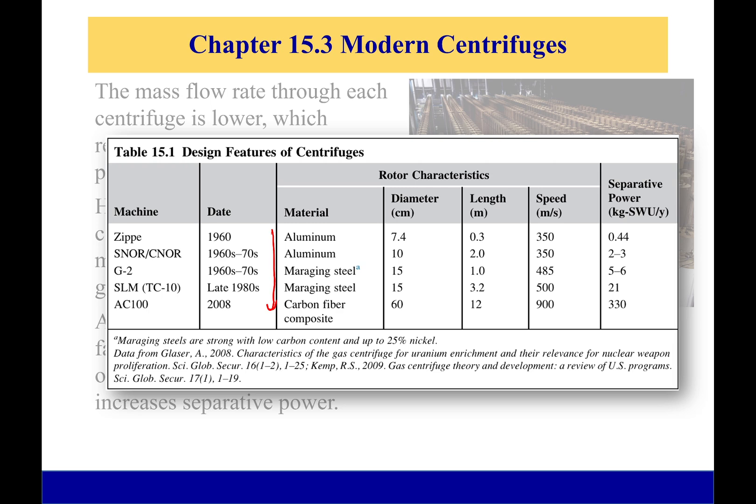And so my separation power, which is just how much I can separate per energy it uses to do that, is jumping dramatically. So it goes from about 0.44 in 1960 to 330 in 2008. You can see that even just from 1980 to 2008, we had a humongous jump as we went from steel to carbon fiber composite because we were able to increase this velocity dramatically. So the better our materials, the better this technology gets and the more selective it is.